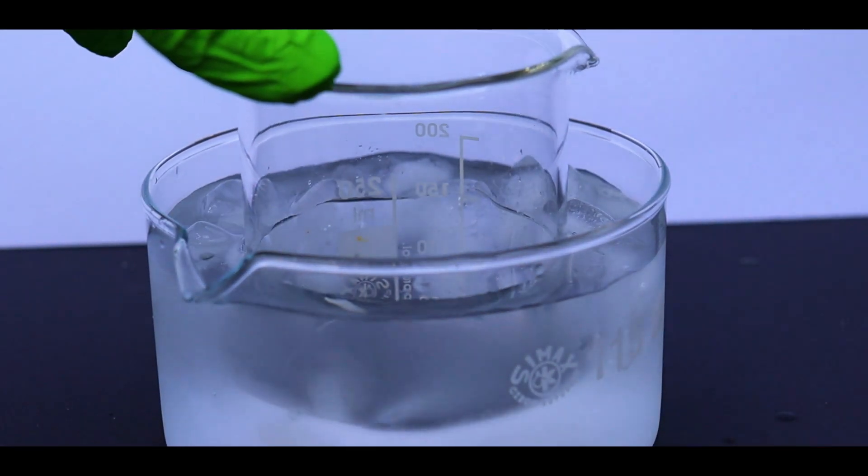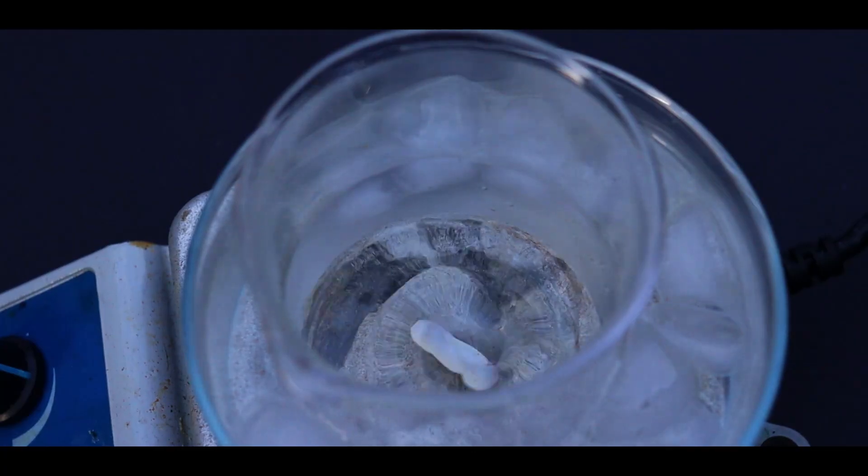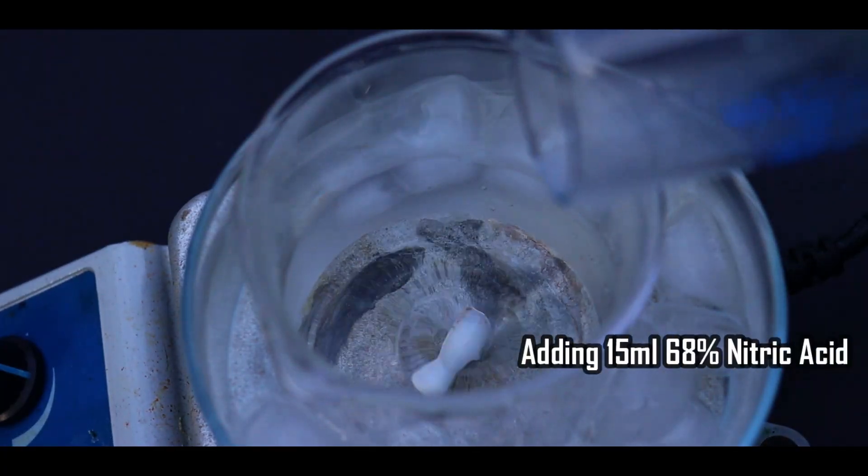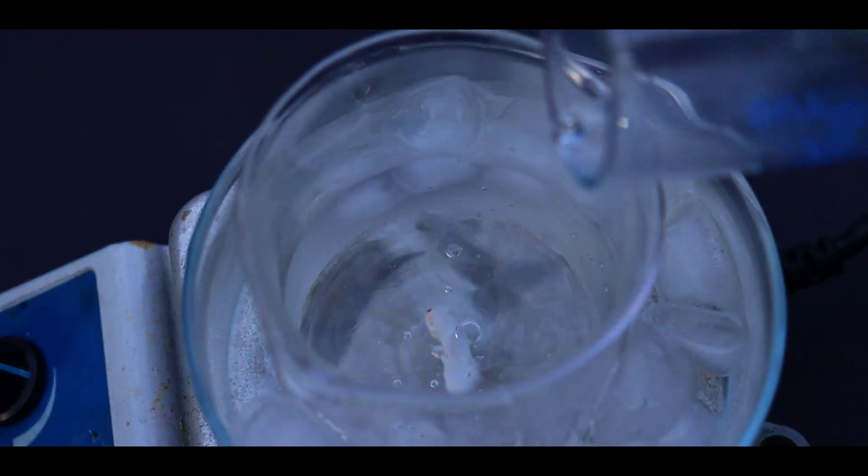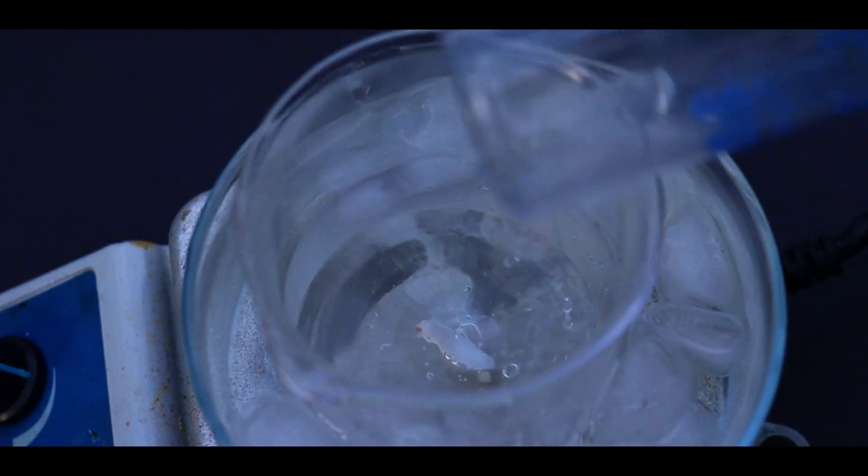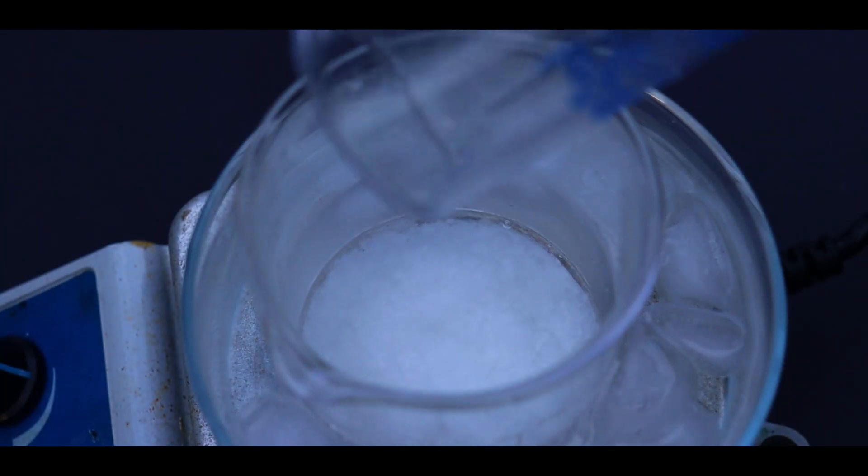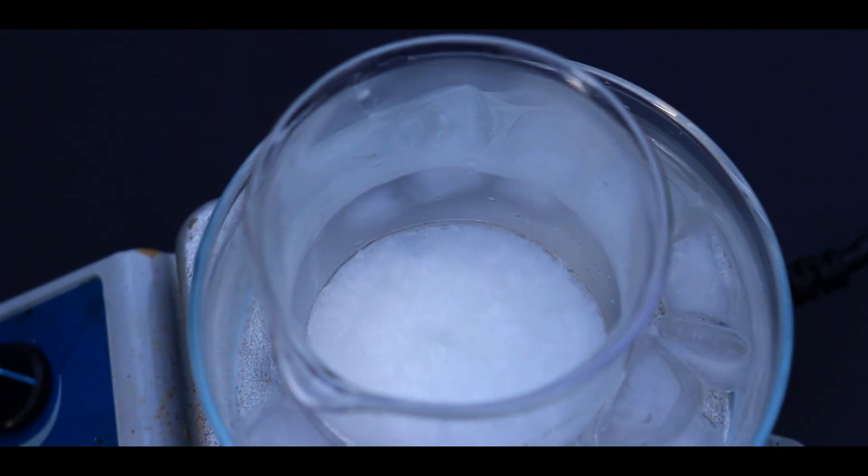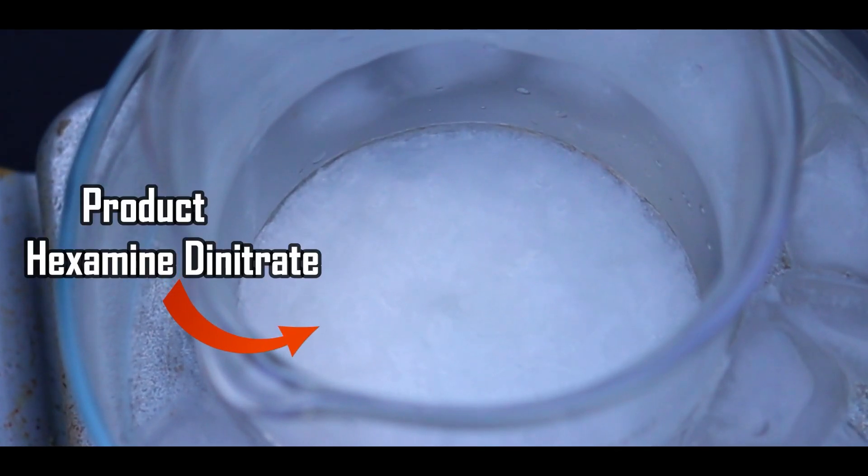When I eventually felt that it had cooled enough I then poured 15 milliliters of nitric acid all at once into the hexamine solution. At first nothing happened but then all of our product crashed out of solution in the form of tiny white crystals. This is our hexamine nitrate, or dinitrate to be precise.